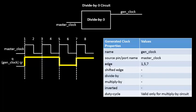This edge-based definition completely defines the generator clock's relationship with the master clock. In this case, it cannot be substituted by a divide-by option because the duty cycle is not 50%. Had the duty cycle been 50%, it could have been defined by a binary division. But since this waveform has a non-50% duty cycle, even though it is a divide-by circuit, it cannot be represented using just a divide-by option.